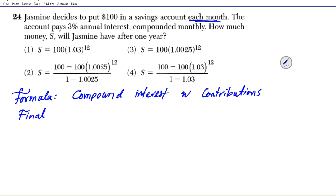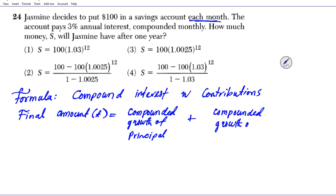What we're looking at is the final amount after a period of T years. Final amount as a function of T years is basically the compounded growth of the principal plus compounded growth of your contributions.